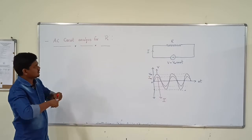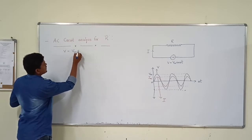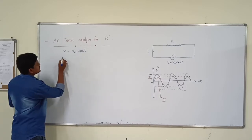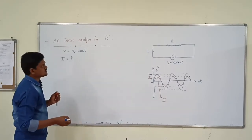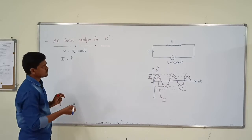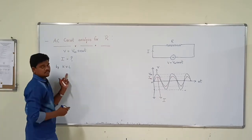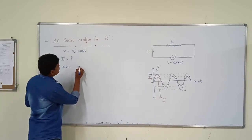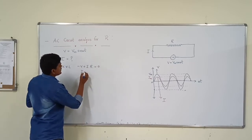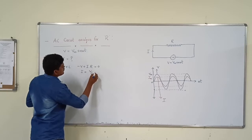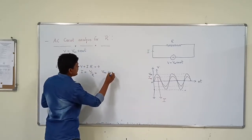The voltage supply applied to the resistor is V equal to Vm sin omega t, but we do not know the current. We have to find out the current. Simply, you have to apply KVL to the circuit: minus V plus I into R equal to 0. By that, we will find out I equal to V by R. But the AC supply voltage formula gives Vm sin omega t by R.